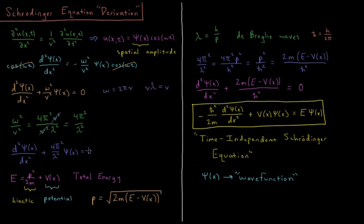The total energy of a particle E equals ½mv², which also equals p²/2m plus whatever the potential energy is — kinetic plus potential. Solving for p by multiplying both sides by 2m, subtracting the potential term, and taking the square root gives: momentum equals the square root of 2m times the total energy minus the potential energy. This holds as long as the potential energy is independent of time and the system is conservative, which will be the case for quantum systems.